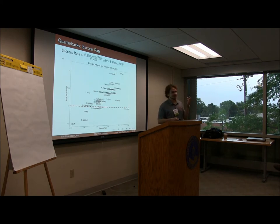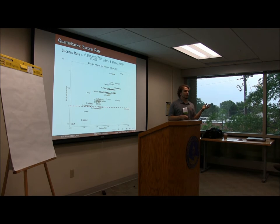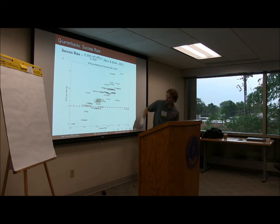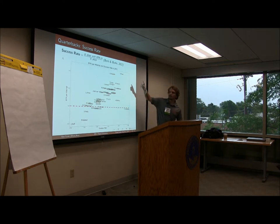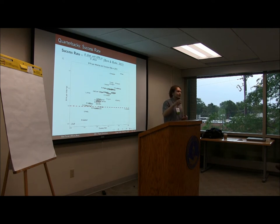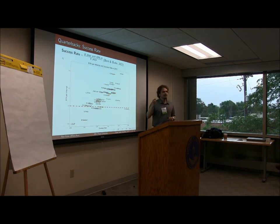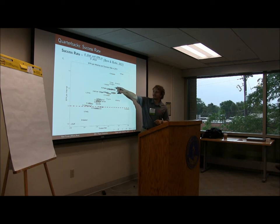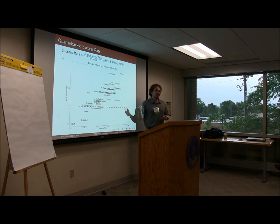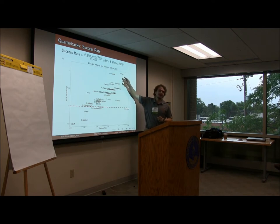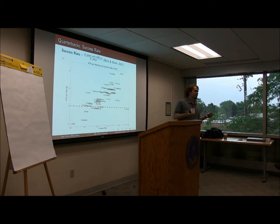Another measure is success rate. Brian Burke evolved the idea introduced in The Hidden Game of Football and came up with simply measuring the percentage of plays with positive expected points added. The x-axis is success rate and the y-axis is EPA per attempt — and obviously there's a relationship. Jimmy Garoppolo has the same success rate as Tom Brady and Aaron Rodgers but a much higher EPA per attempt, so maybe if Jimmy G gets playing time next year, it's probably going to come back down to earth. Similarly, Matt Ryan might have overachieved somewhat last year.